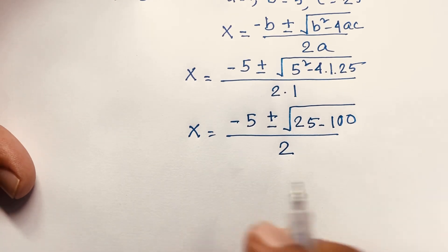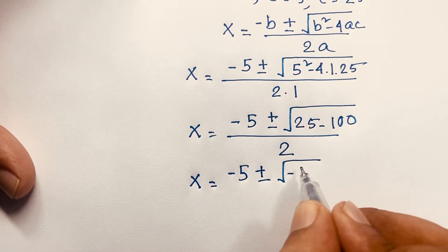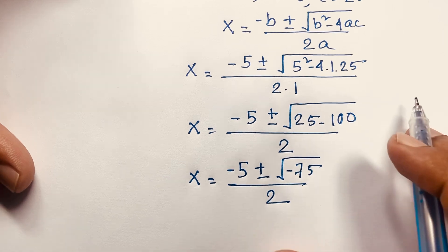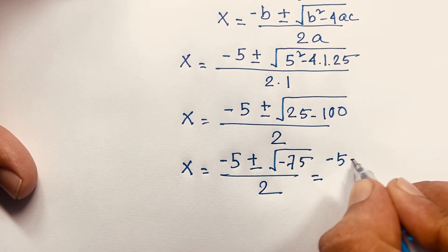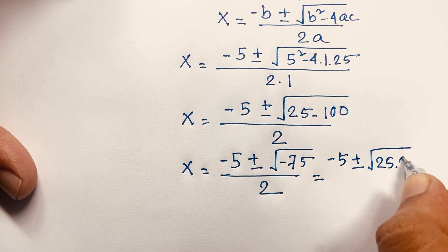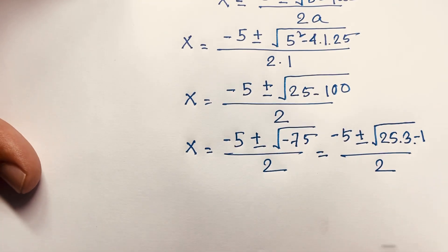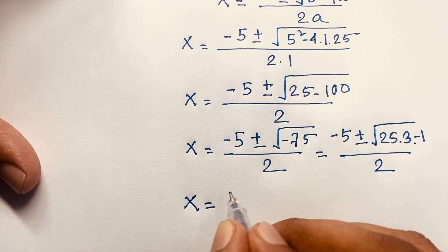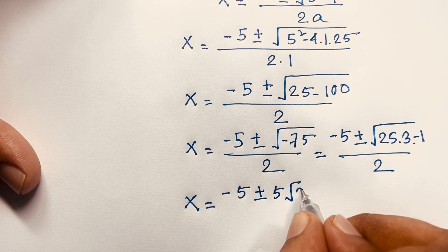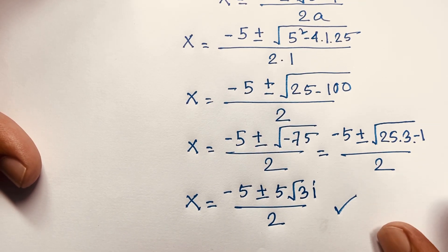This gives x equals negative 5 plus or minus square root of 25 minus 100, over 2, which is negative 75 under the radical. We can write this as negative 5 plus or minus square root of 25 times 3 times negative 1, over 2. The square root of 25 is 5, and the square root of negative 1 is i, so x equals negative 5 plus or minus 5i root 3, over 2.